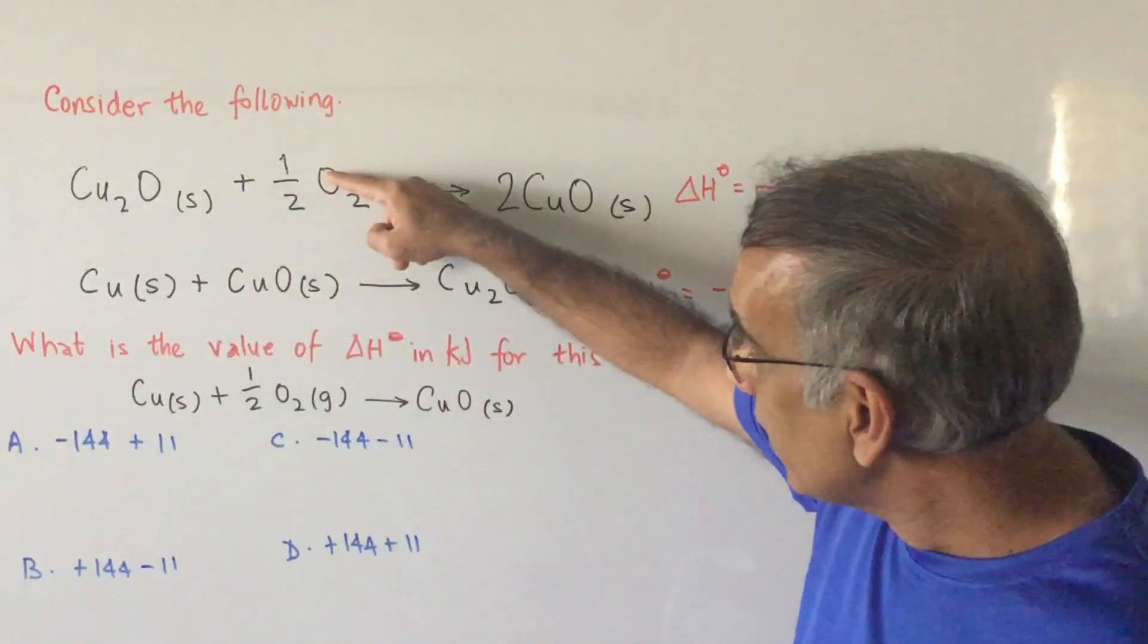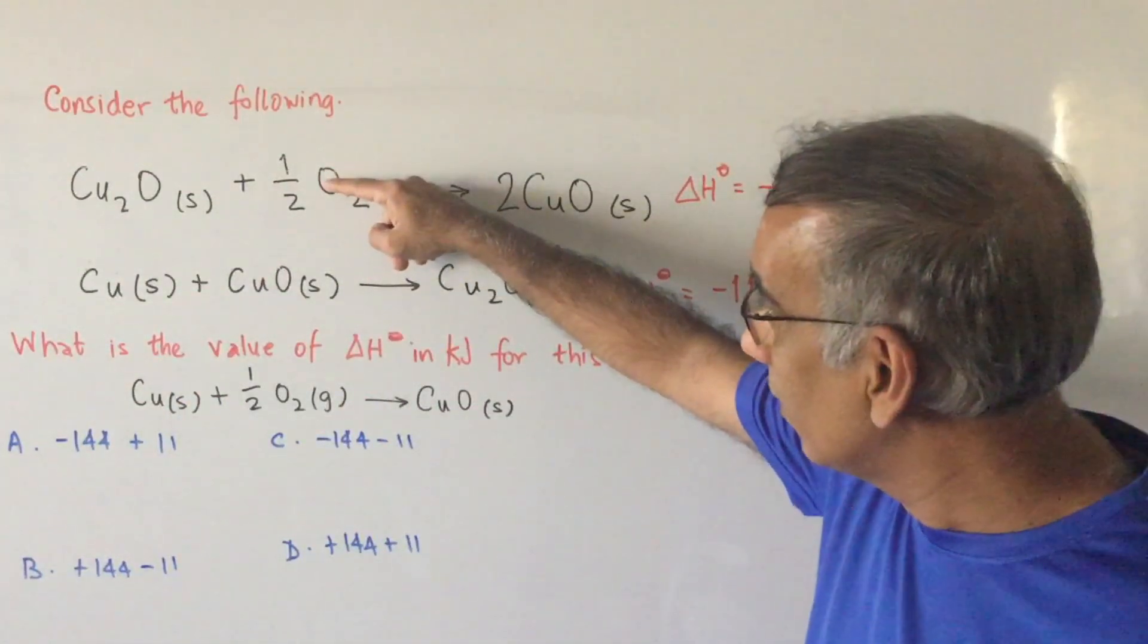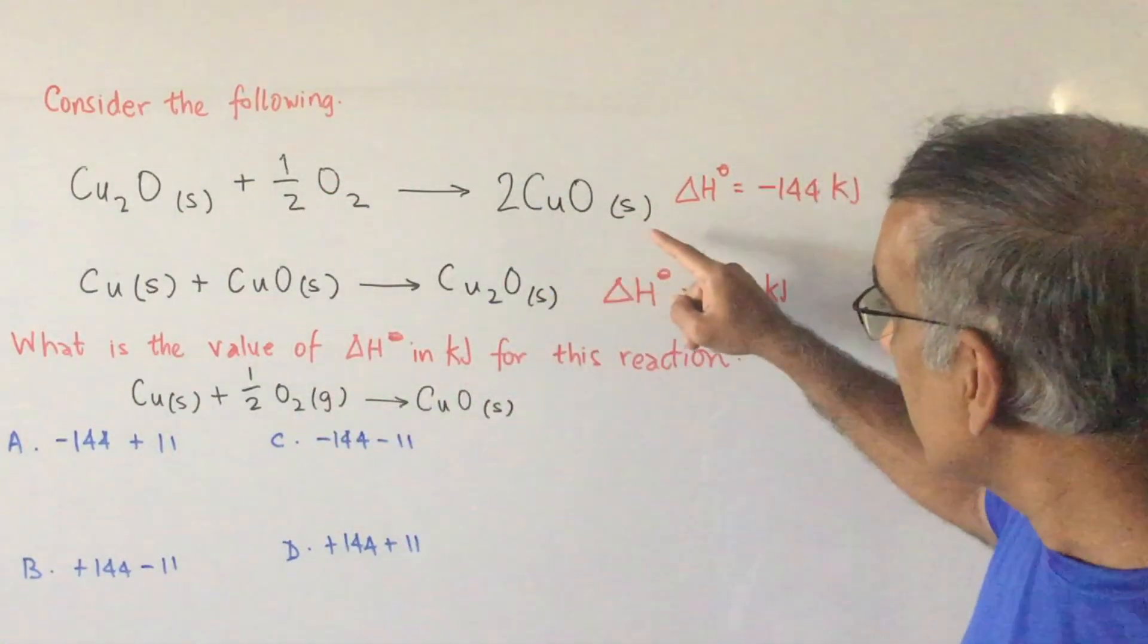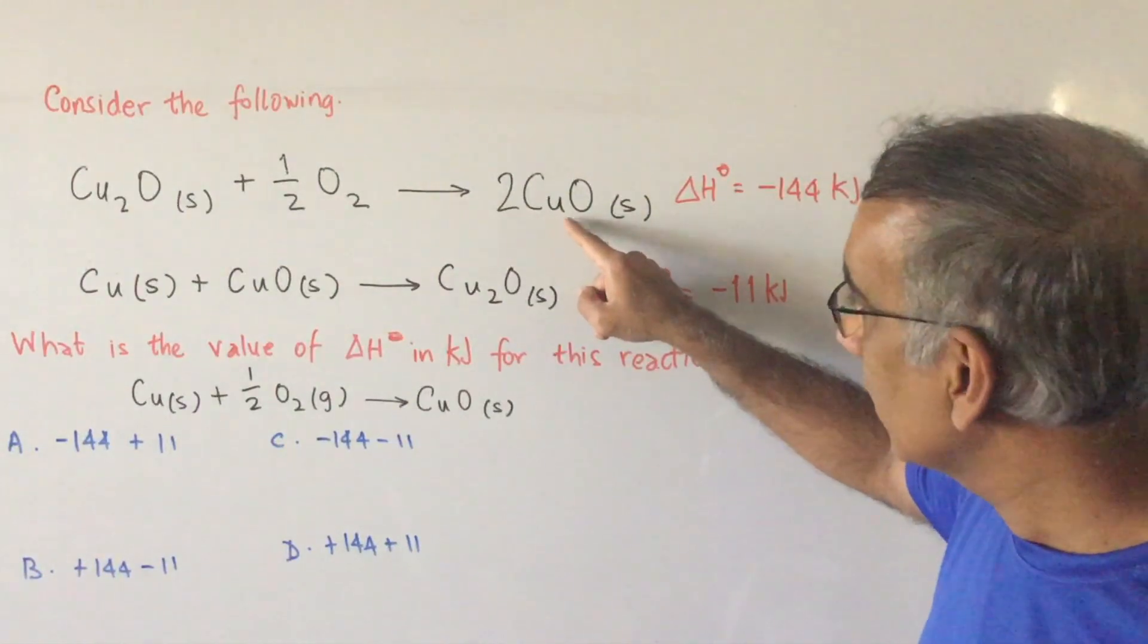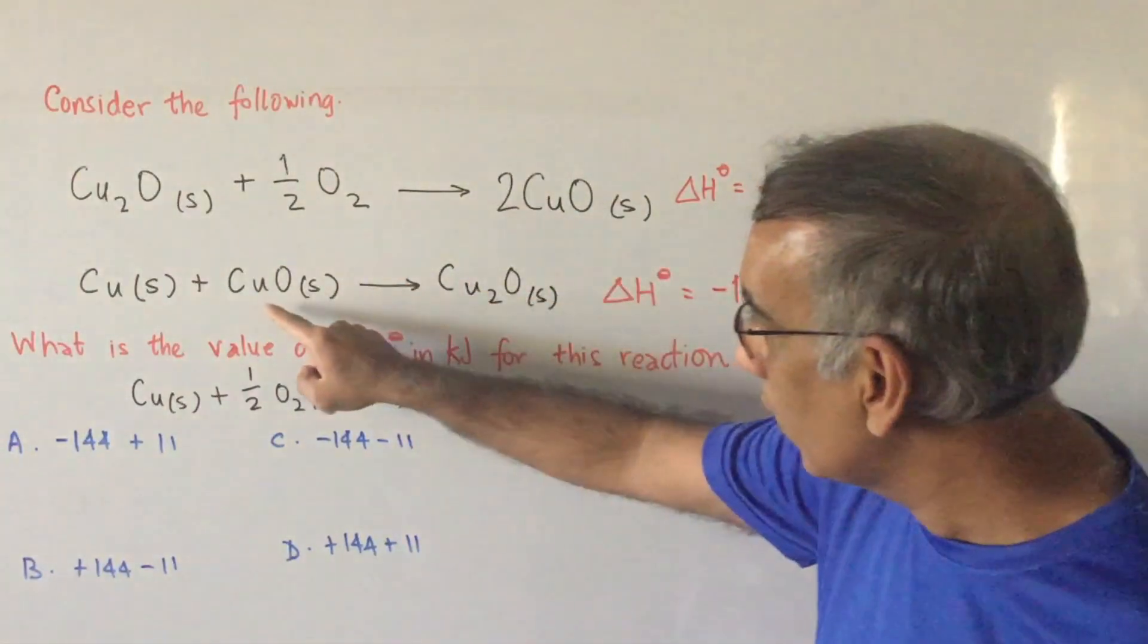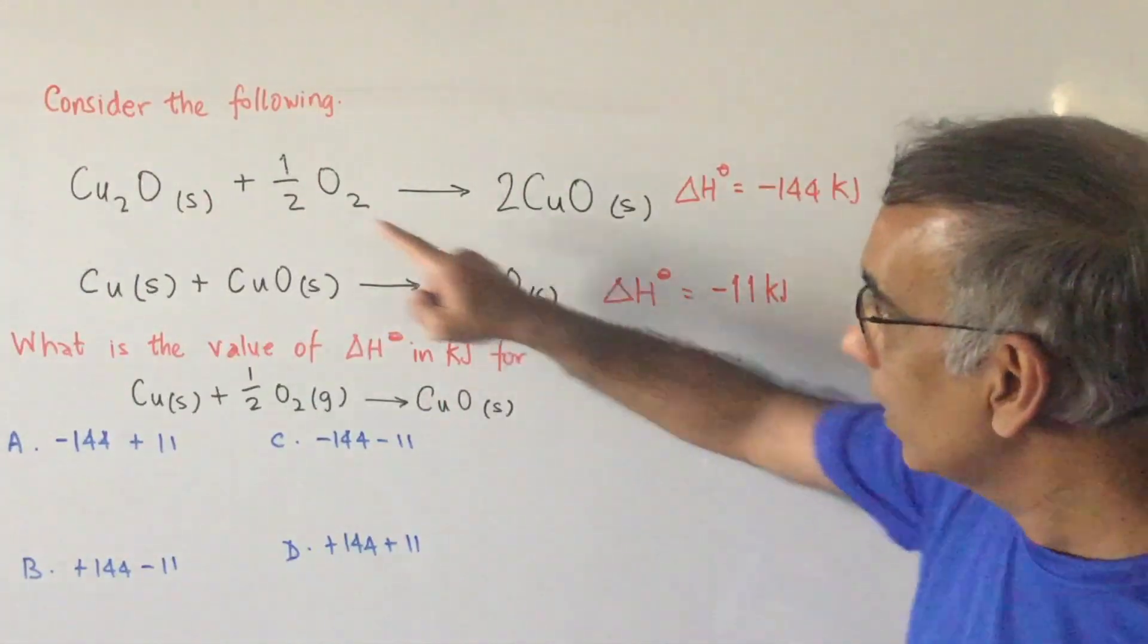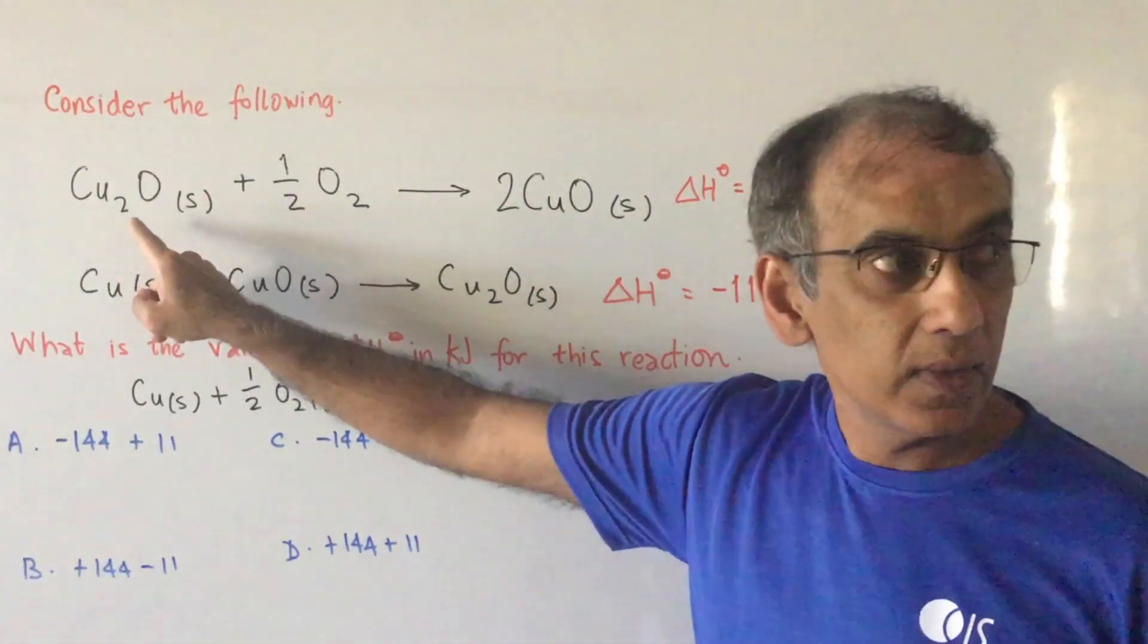And then we see we've already got half of an O2 here, so that matches with this. And we see on this side we have two copper oxide and here one copper oxide. And here's Cu2O and Cu2O on this side.